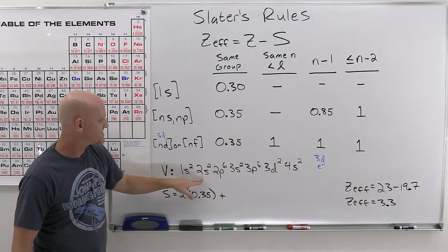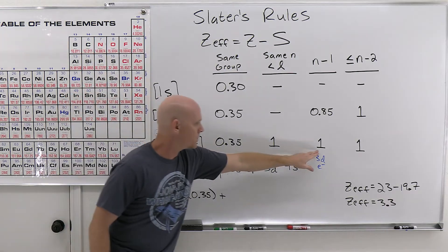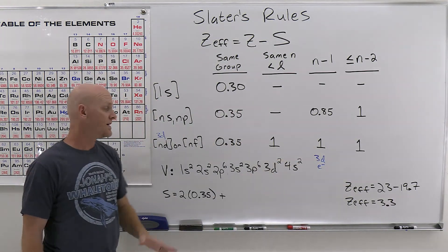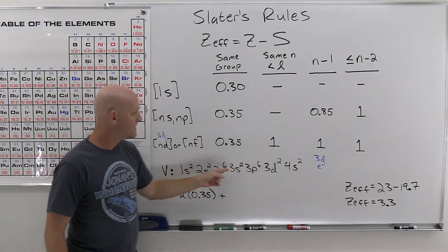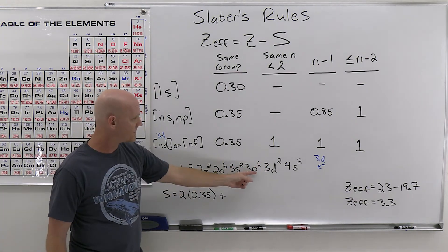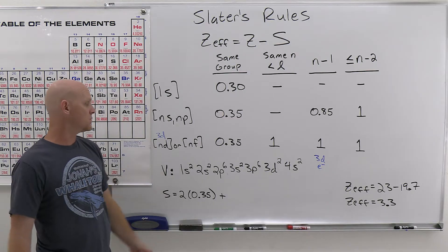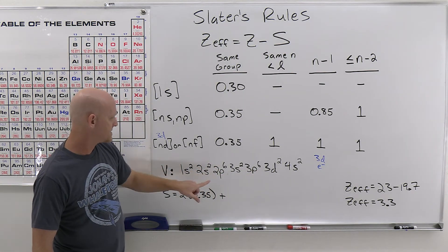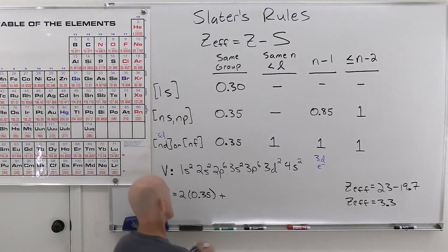So in this case, we're looking at a 3d electron, so the 3s and 3p contribute 1. n minus 1, which is shell 2 here, would contribute 1. And the 1s's, which is in the n minus 2 or lower, would also contribute 1, which means we can lump all the rest of these electrons from 1s all the way to 3p, and they all just contribute 1. And so that's going to be a total of 6, 8, 14, 16, 18 electrons all contributing 1.